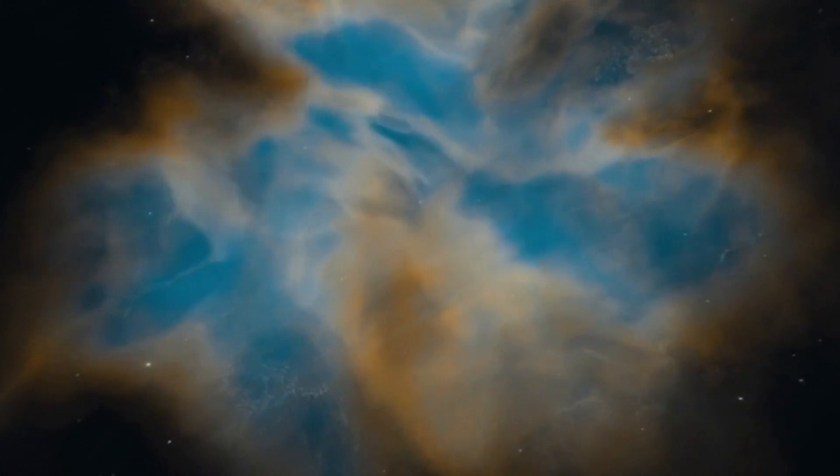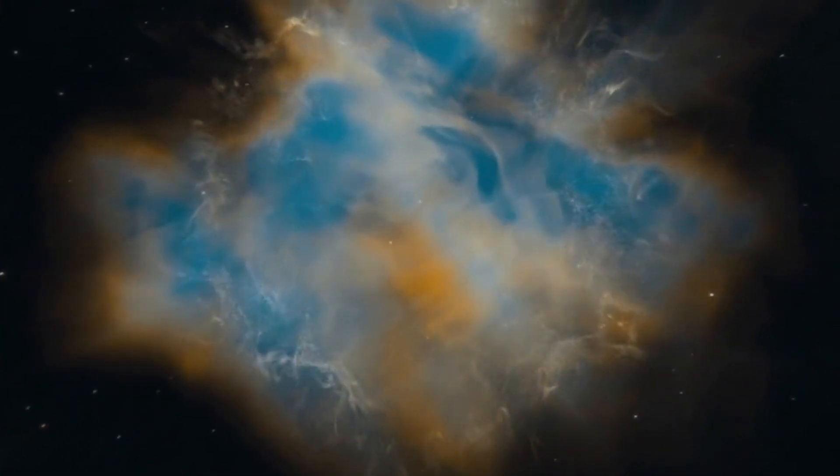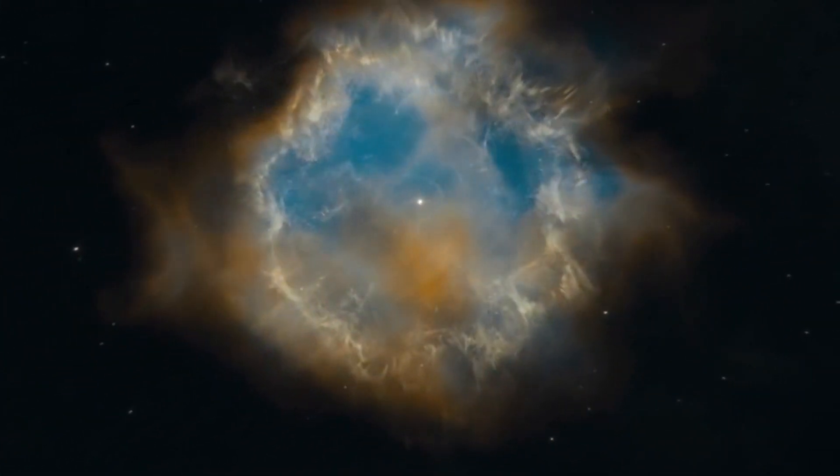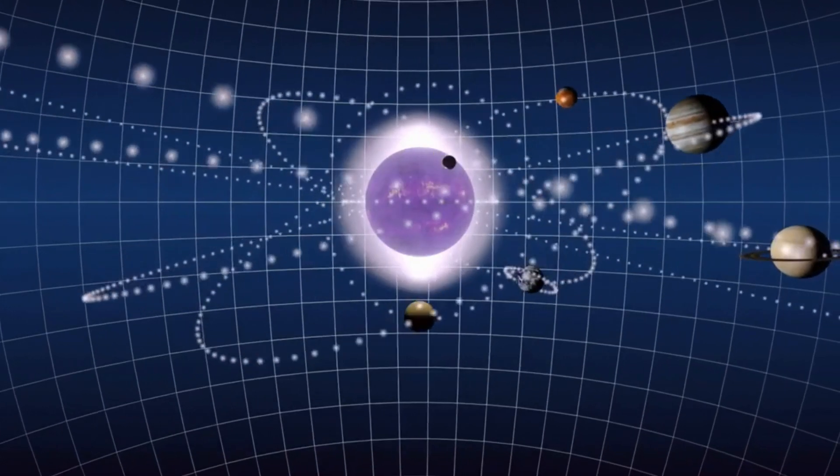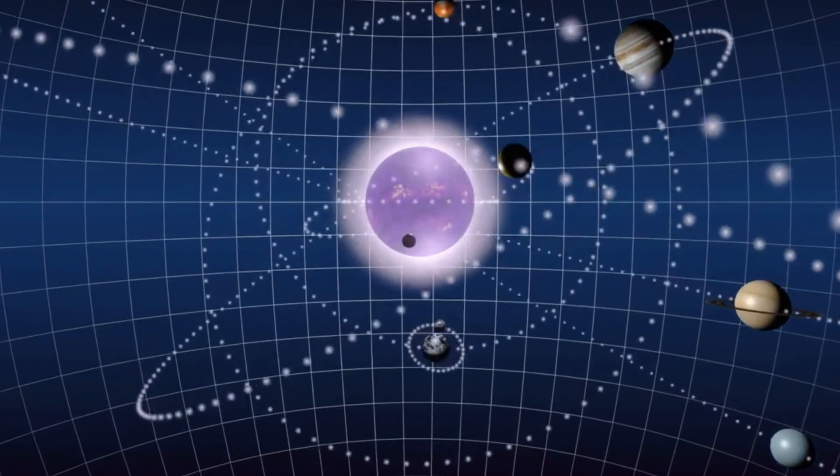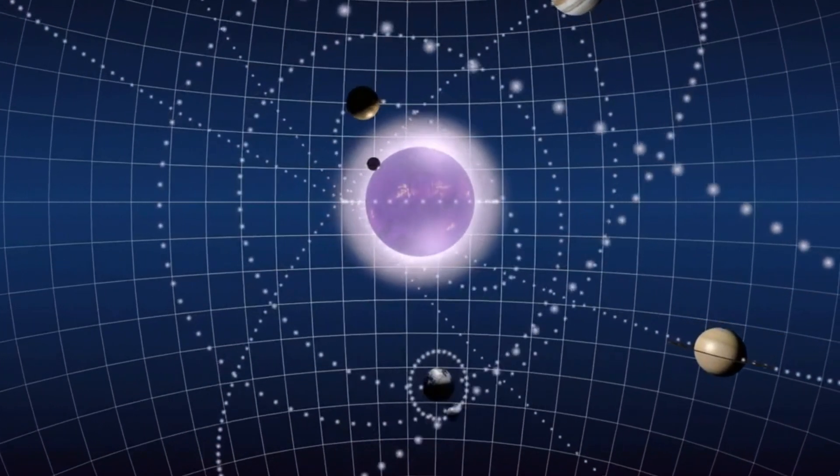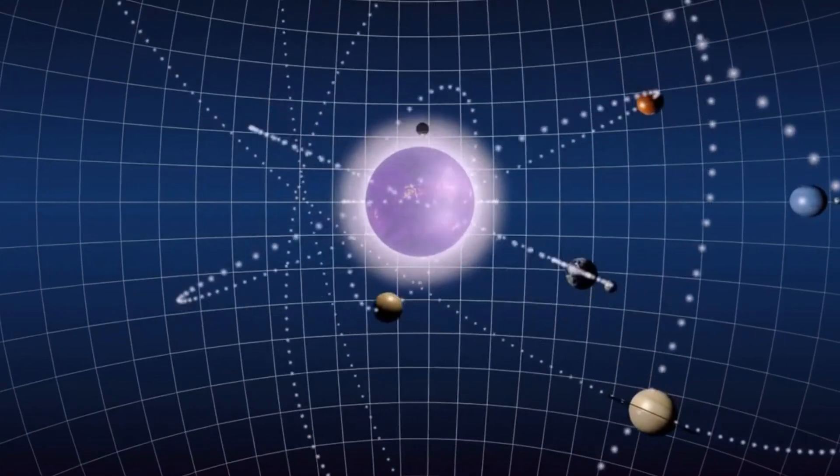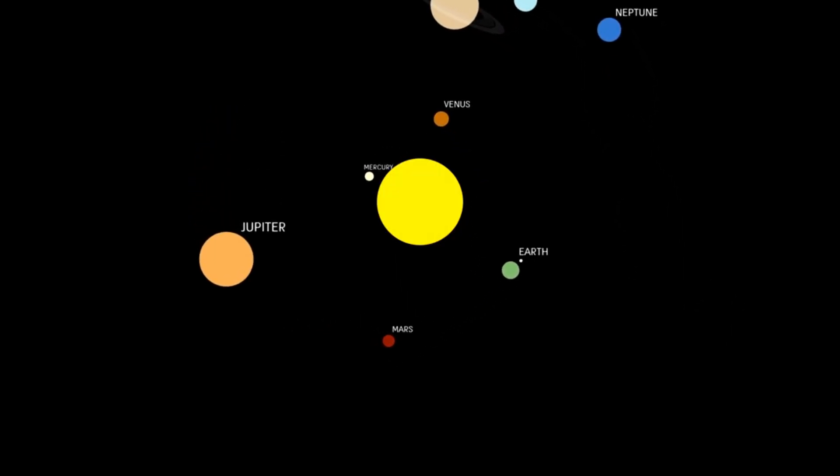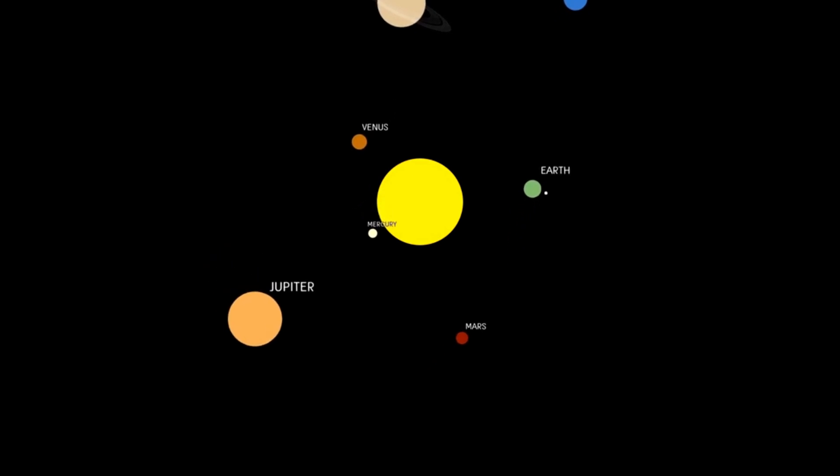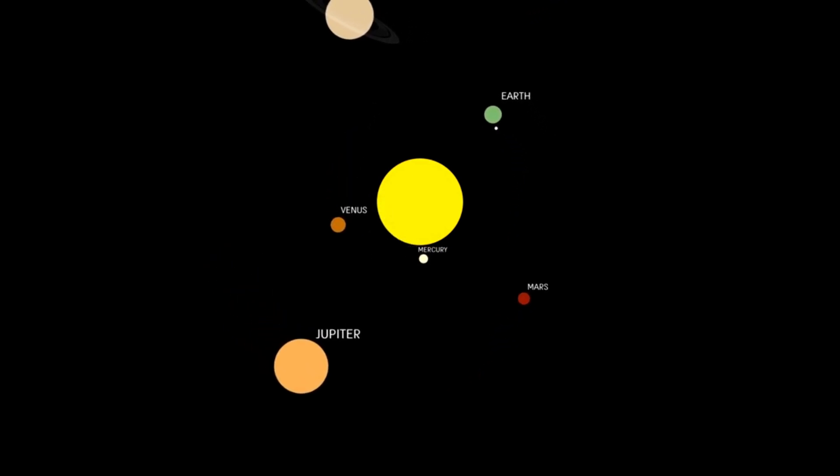One of the most exciting aspects of Webb's observations is its potential to refine our understanding of planetary formation and evolution. Kepler-442b and TOI-700E offer a unique glimpse into the diversity of planetary systems in the universe. For example, Kepler-442b orbits a sun-like star, which provides a stable and predictable environment much like our solar system.